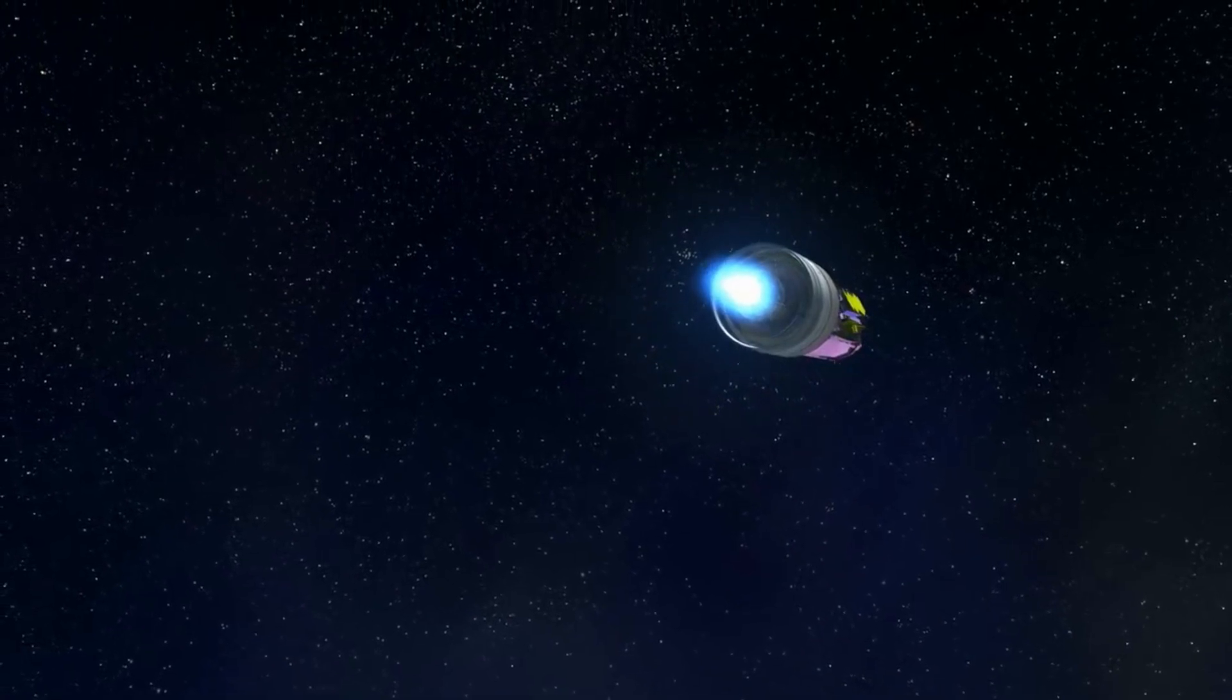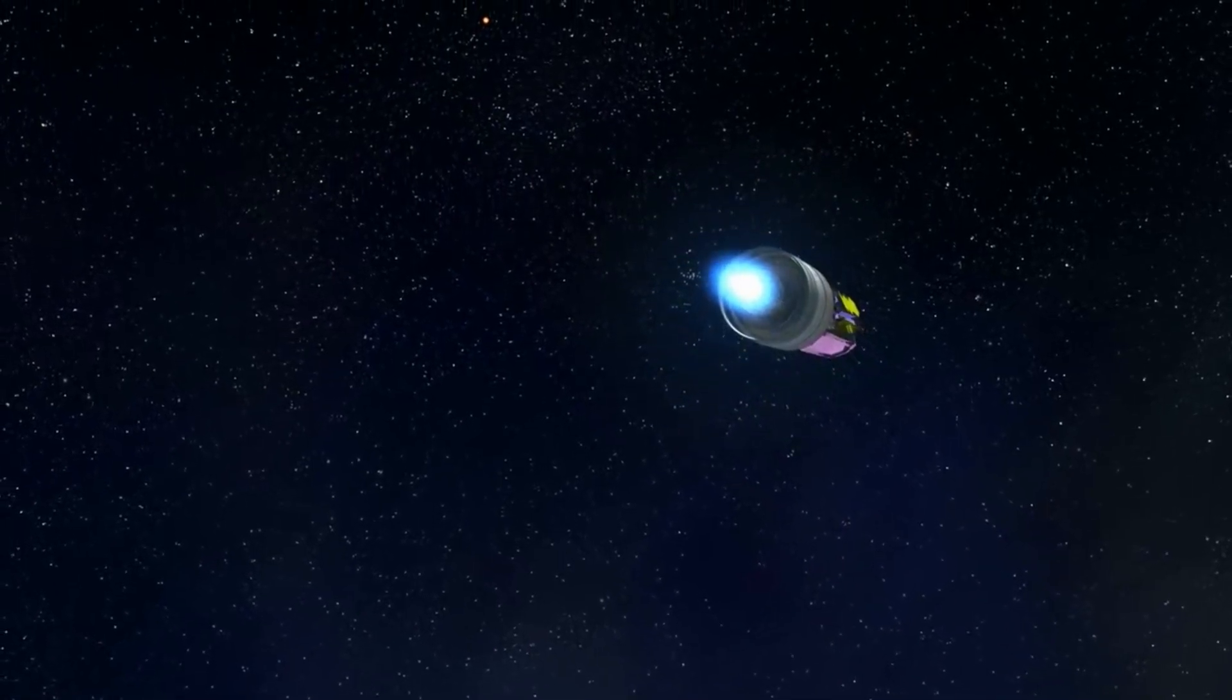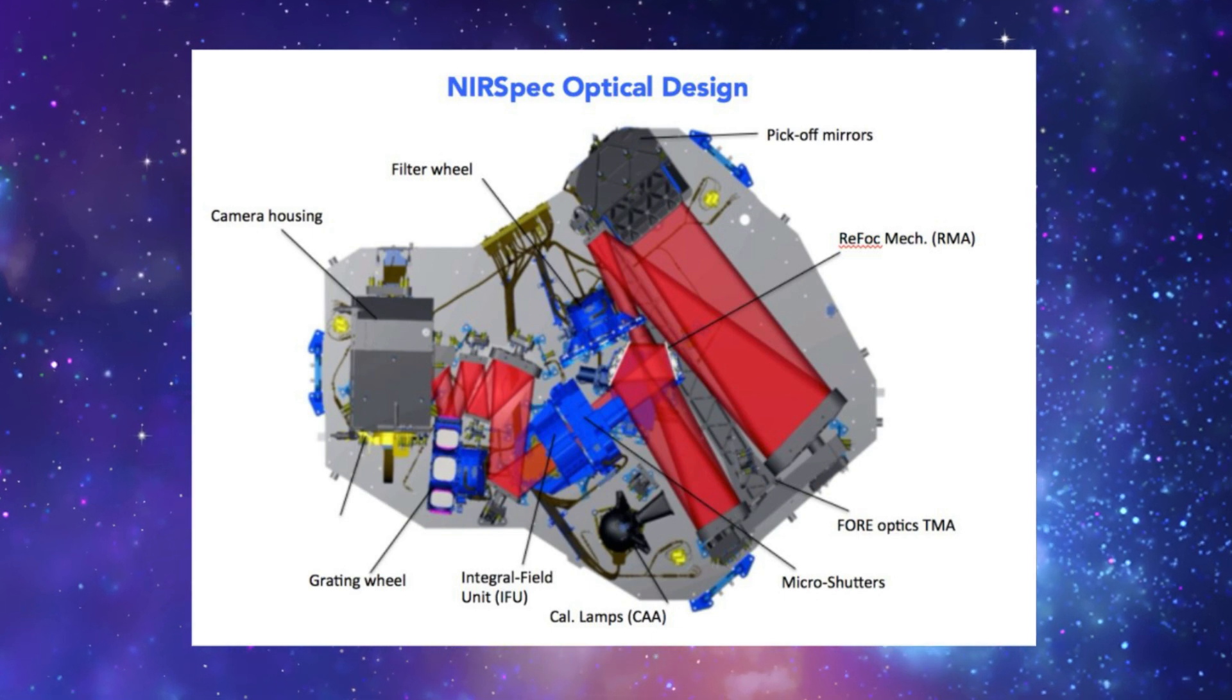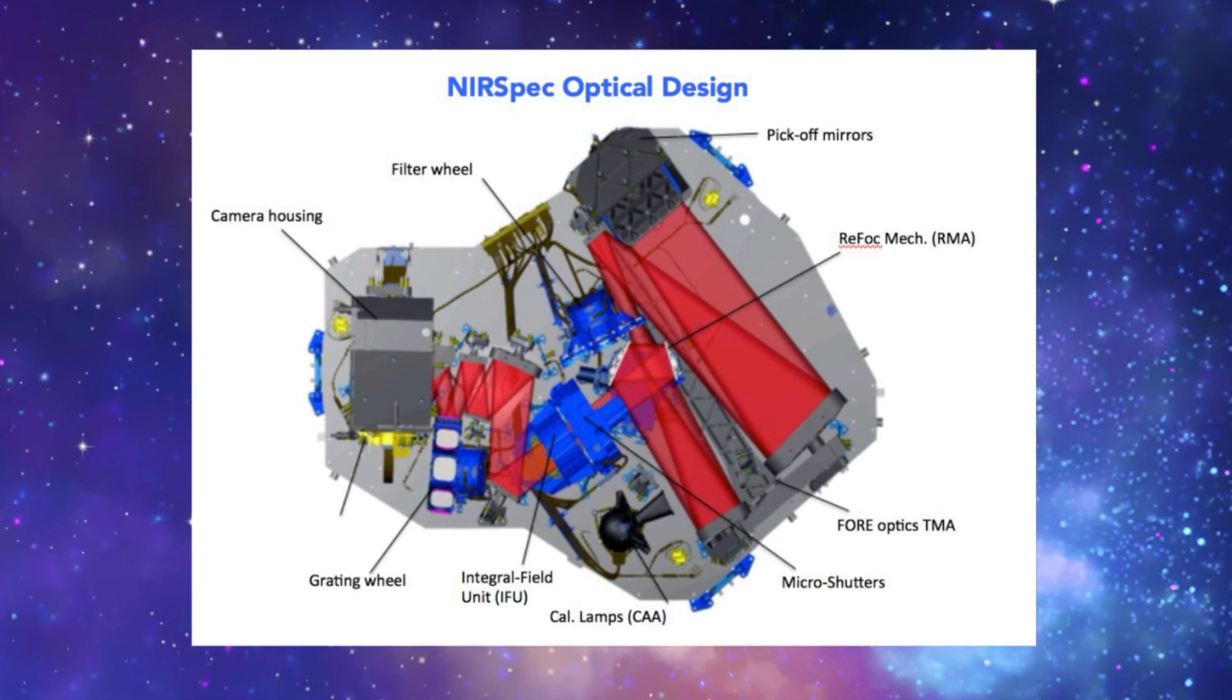to work properly as a spectrograph, NIRSpec has three mechanisms: a filter wheel assembly (FWA), a grating wheel assembly (GWA), and a refocus mechanism assembly (RMA).